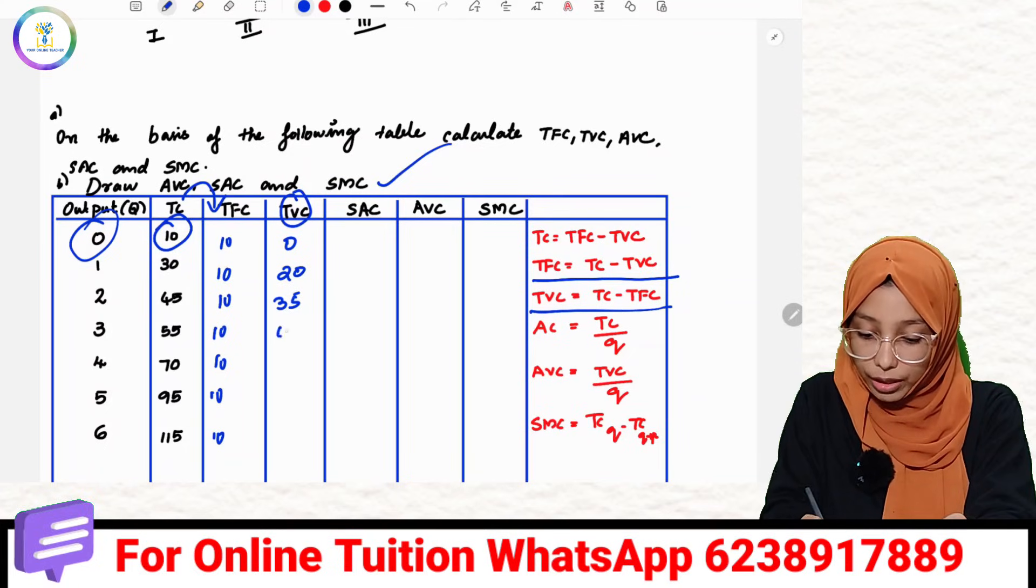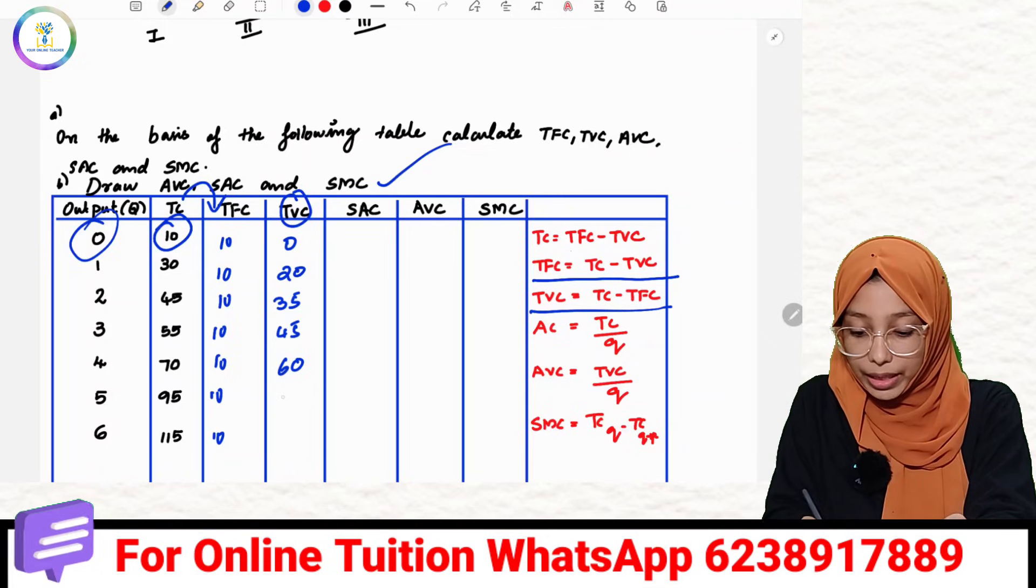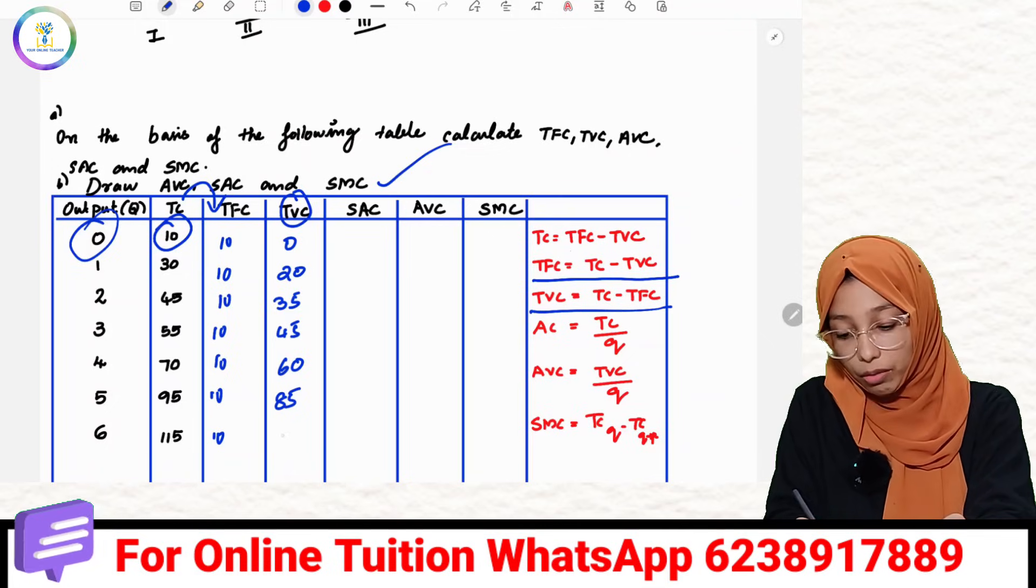Then 55 minus 10 is equal to 45. Then 70 minus 10 is equal to 60. 95 minus 10 is equal to 85. Then 115 minus 10 is equal to 105.